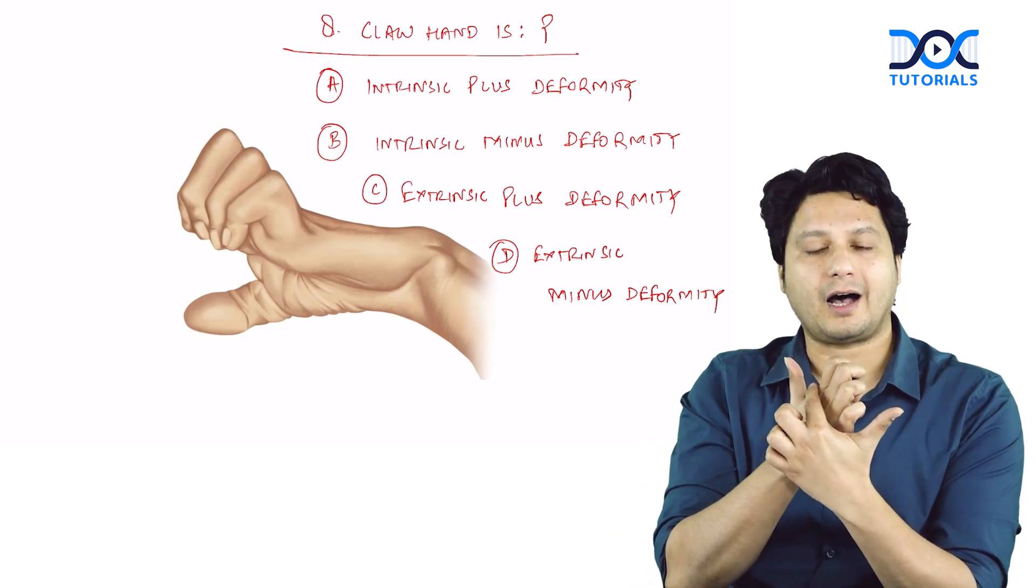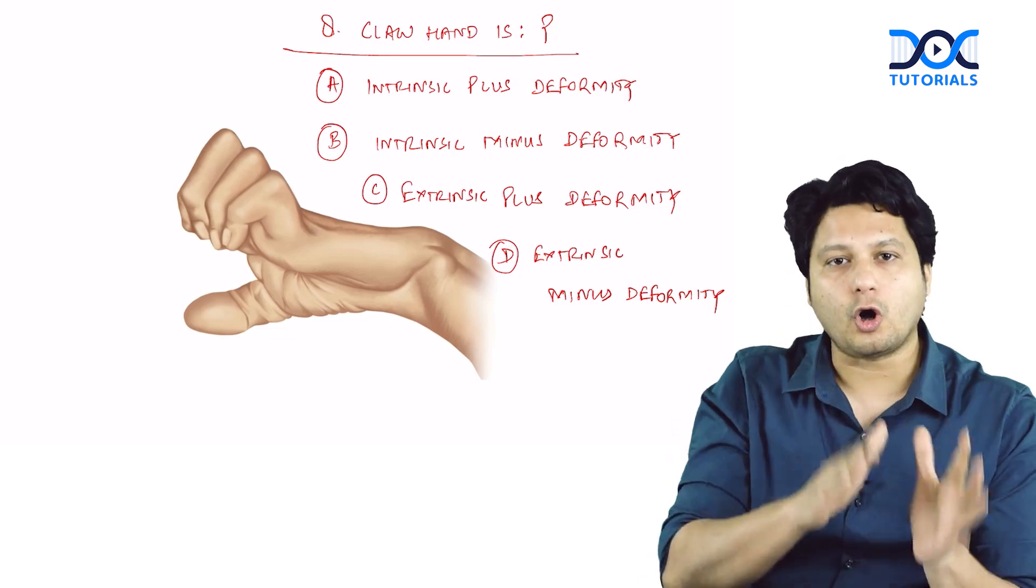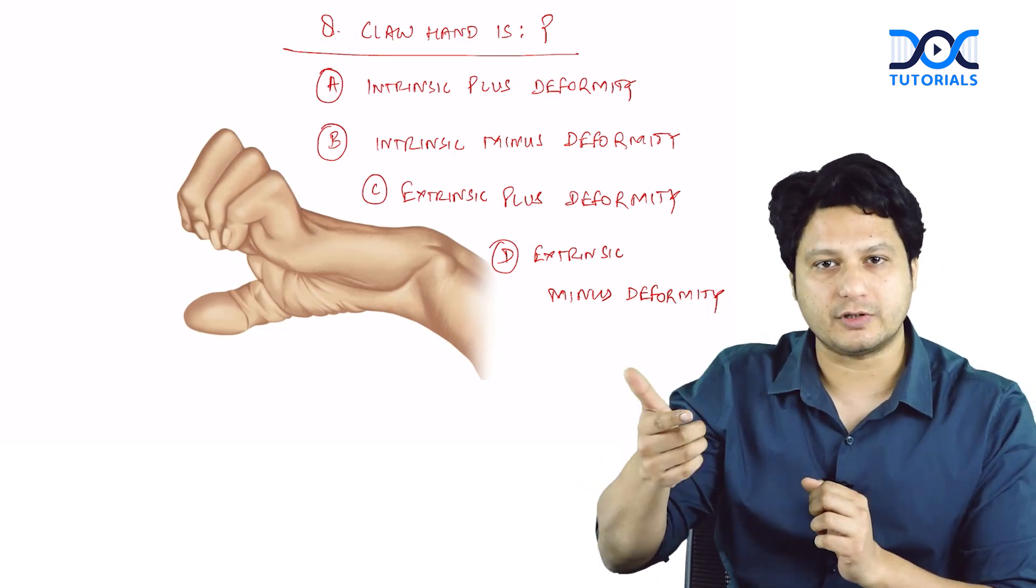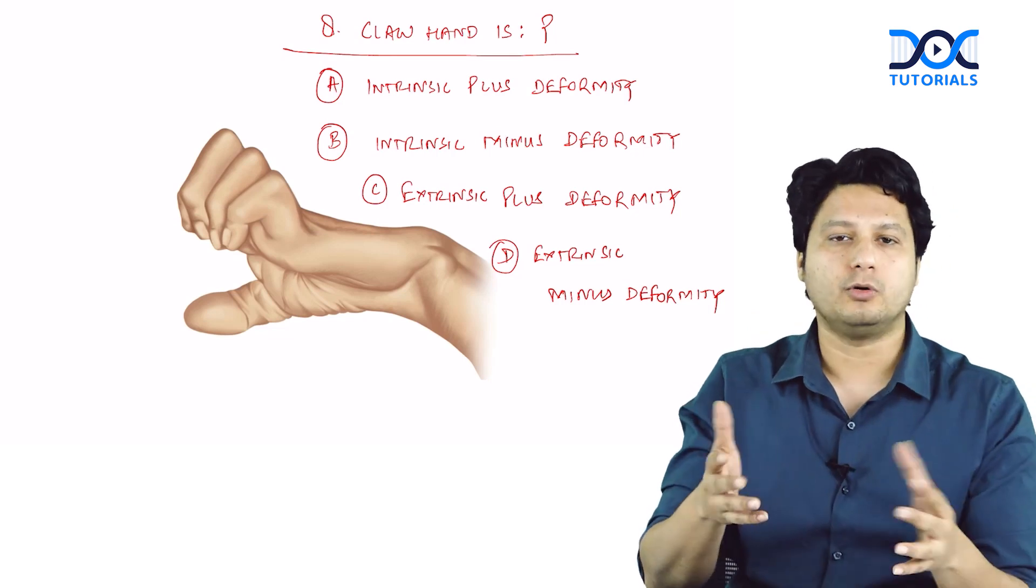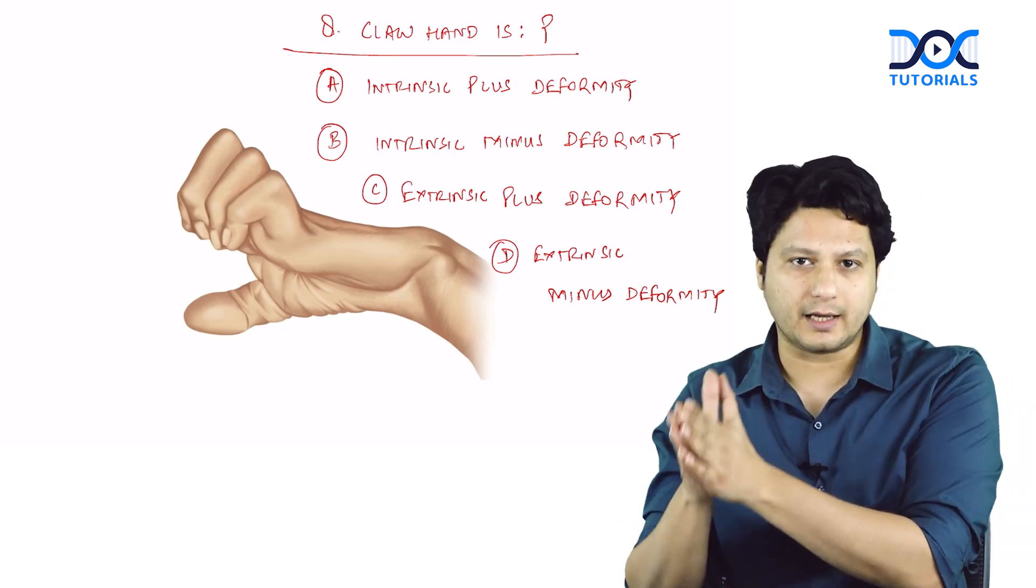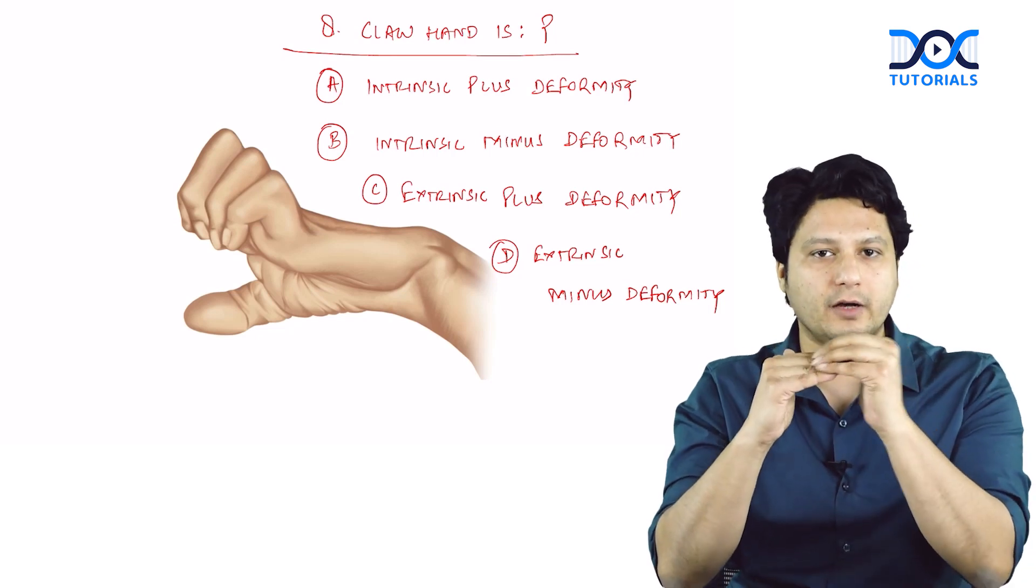There is a hyperextended metacarpophalangeal joint and flexion of the interphalangeal joint. This claw hand deformity is because of a nerve injury, the ulnar nerve, which is responsible for supplying lumbricals. The function of the lumbrical is flexion of the metacarpophalangeal joint and extension of the interphalangeal joint.